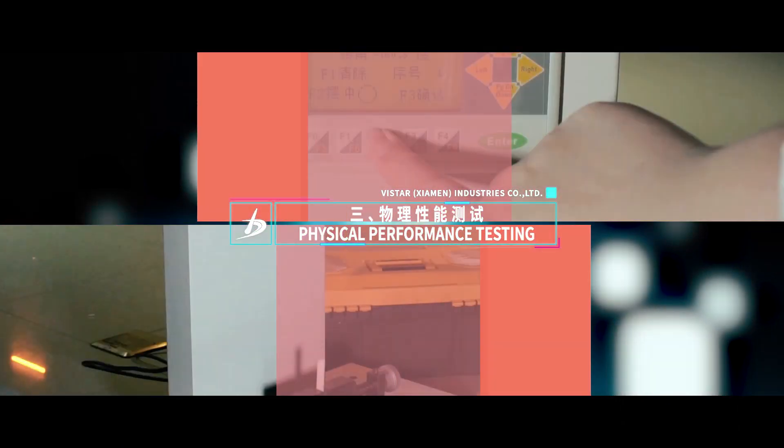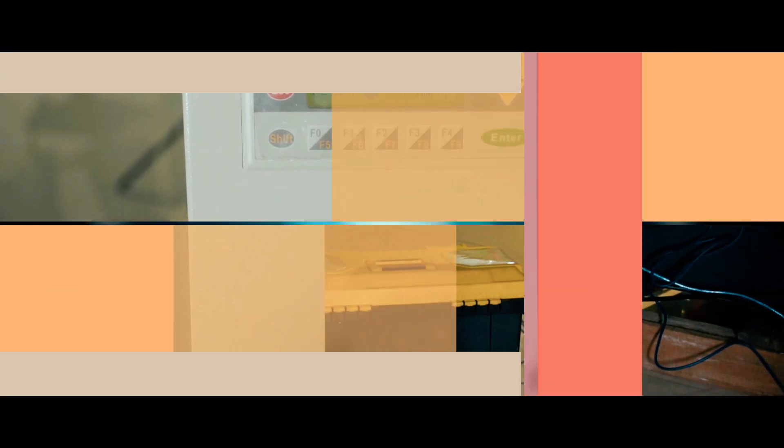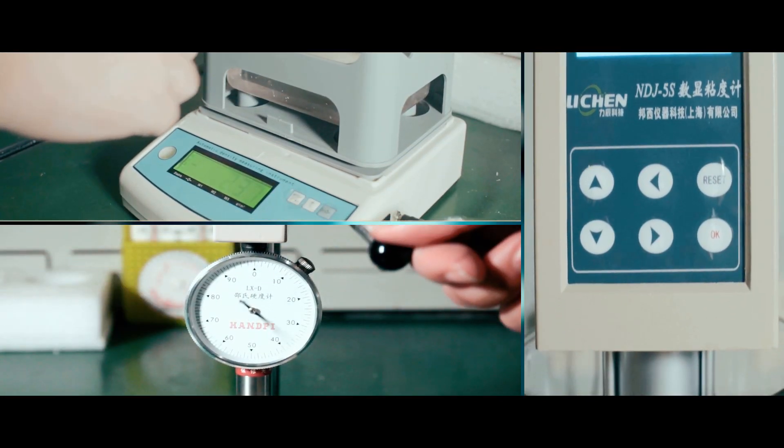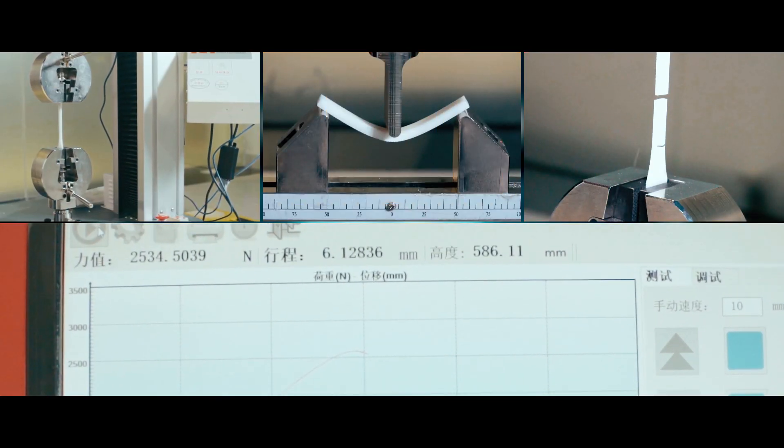Every kind of photosensitive resin material must be tested for its physical properties such as temperature resistance, strength, toughness, impact resistance, notch impact resistance, and deformation bending.